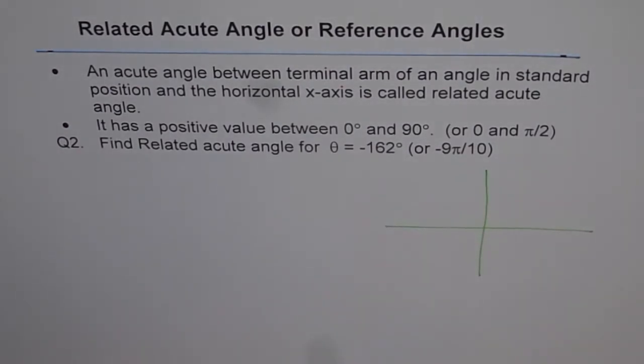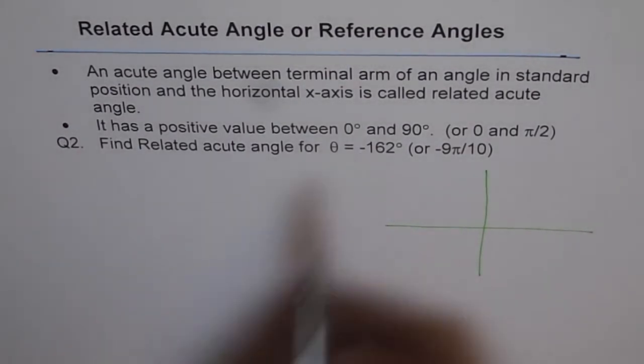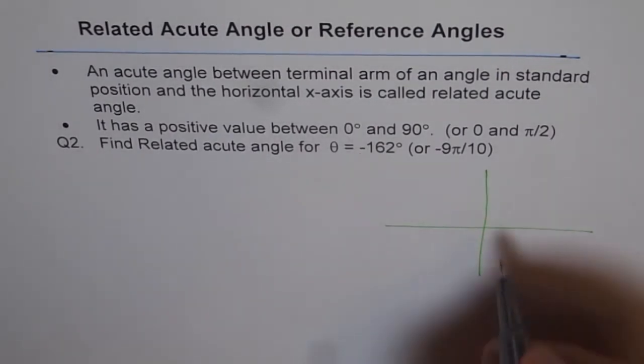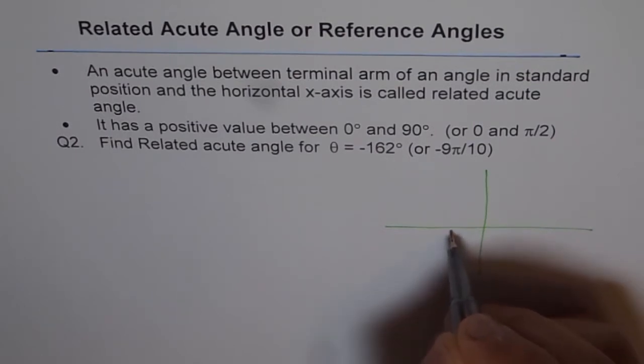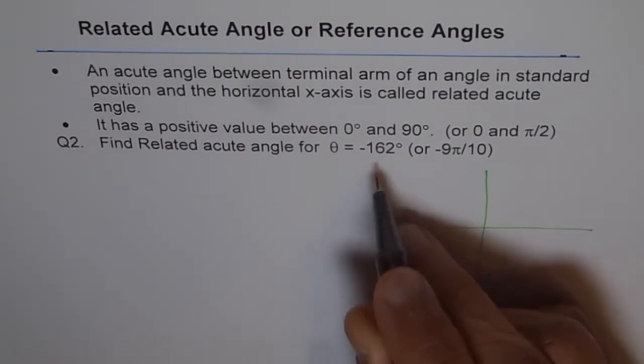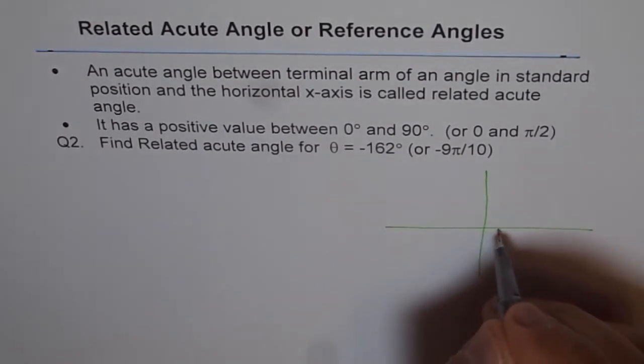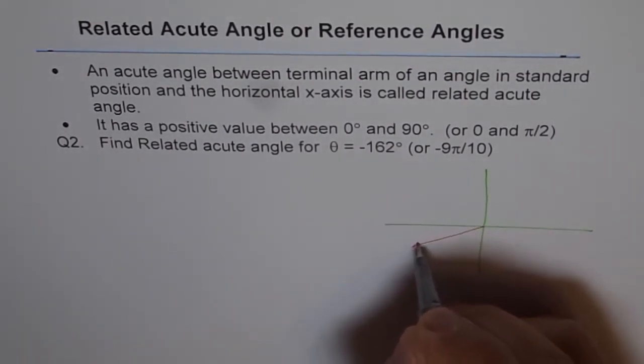So 162 degrees, minus. Minus means you have to go clockwise. And if you go clockwise, from here it is 90 and then it is 180. So 162 is short of 180, so it will be kind of here. Let's draw this.